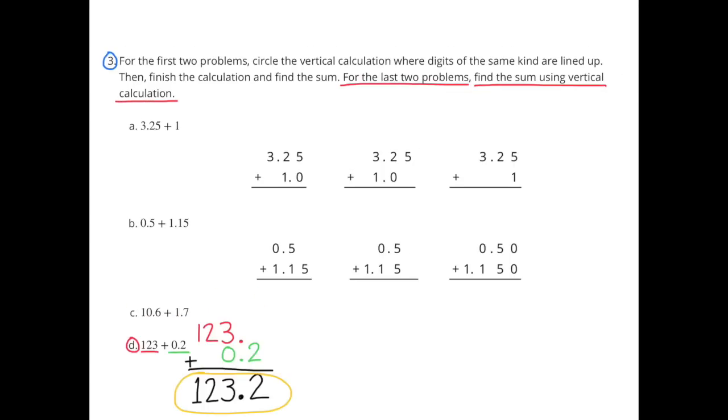D. 123 plus 2 tenths. I line up the decimals. I bring down the 2. 3 plus 0 equals 3. I bring down the 2 and I bring down the 1. 123 plus 2 tenths equals 123 and 2 tenths.